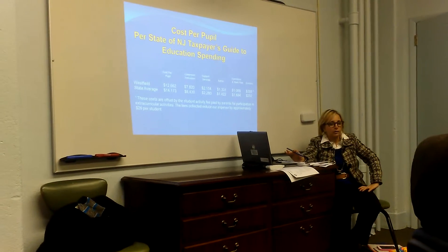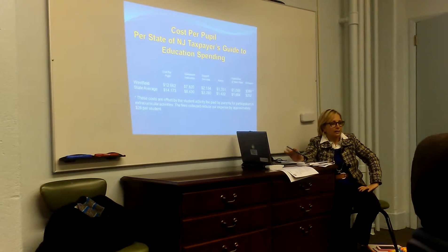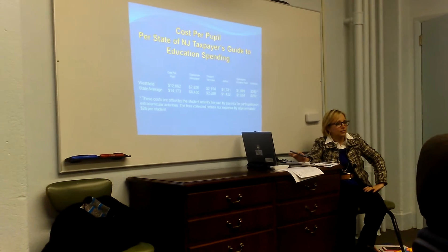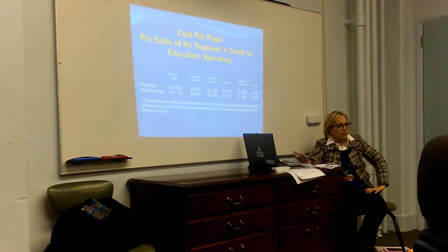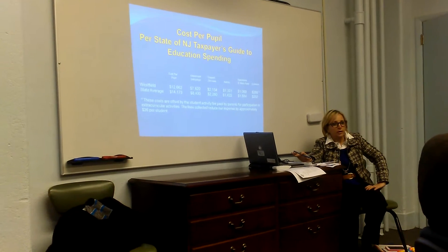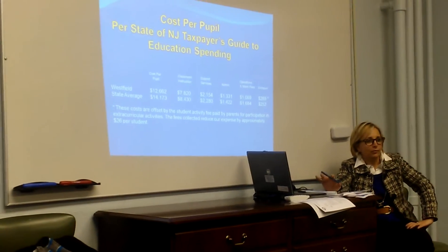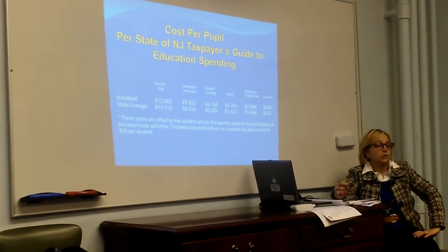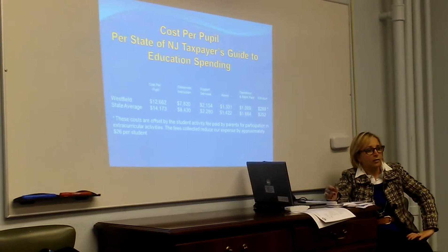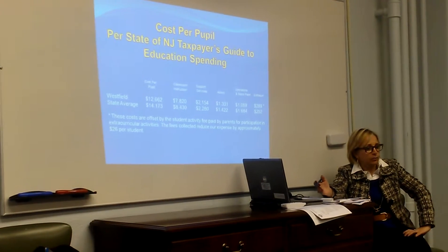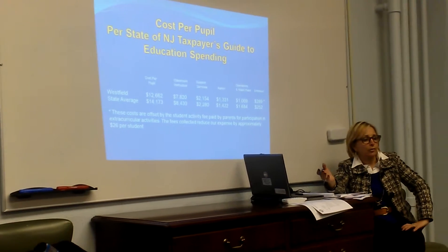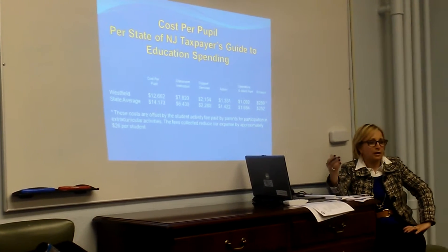These costs are taken out of the budget because they are not considered comparable from district to district. For instance, out-of-district special education is removed because one child could cost two hundred thousand dollars — that's not a number you can really compare. The transportation for out-of-district is also taken out, as is capital outlay, which covers equipment and capital costs, because that's not comparable either.